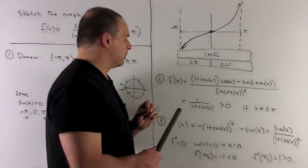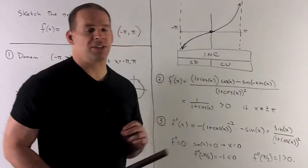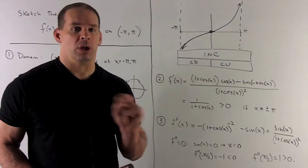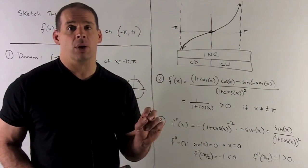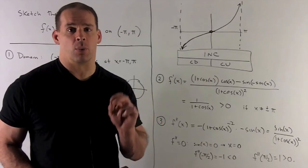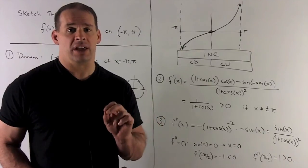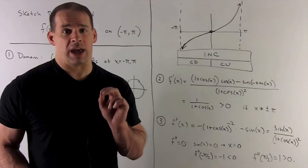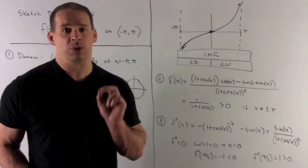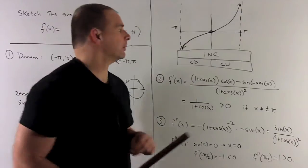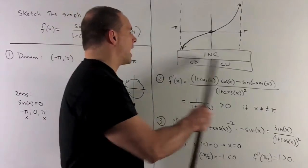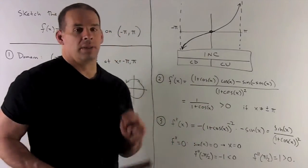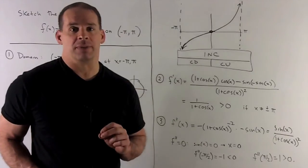Since 1 + cos(x) is either zero or positive — and it's zero only at our asymptotes — the derivative is positive throughout our region. So the function is always increasing on the interval.